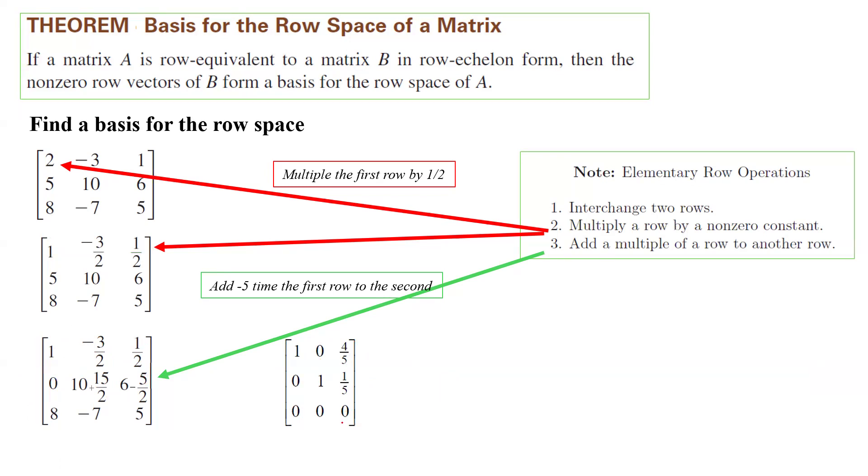Based on the theorem, we are only interested in non-zero rows. Because the matrix is row reduced to 1, 0, 4 over 5, 0, 1, 1 over 5, and 0, 0, 0, the basis for this row space is the very first non-zero row 1, 0, 4 over 5, and the second one is 0, 1, 1 over 5. And that's it. You're going to list non-zero rows. You're going to forget about the zero rows.